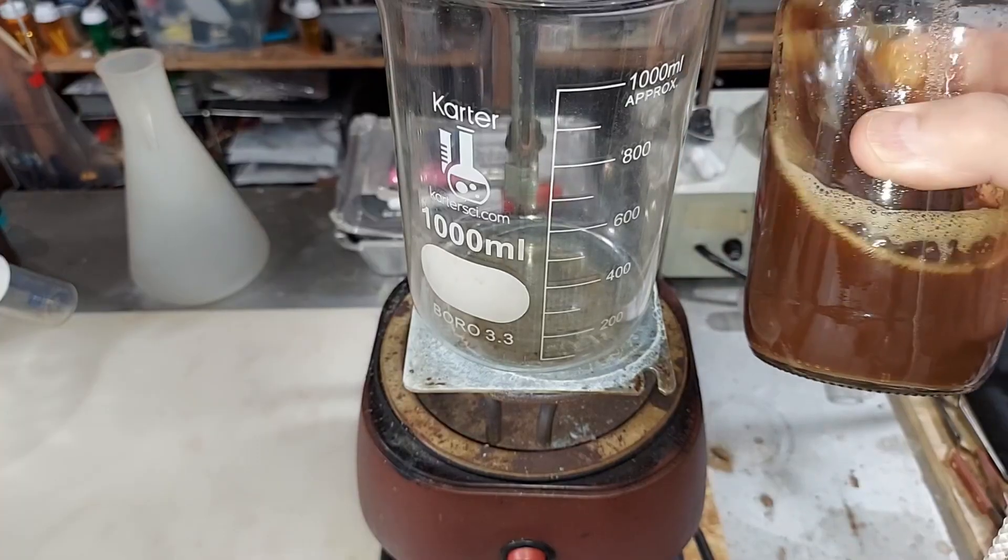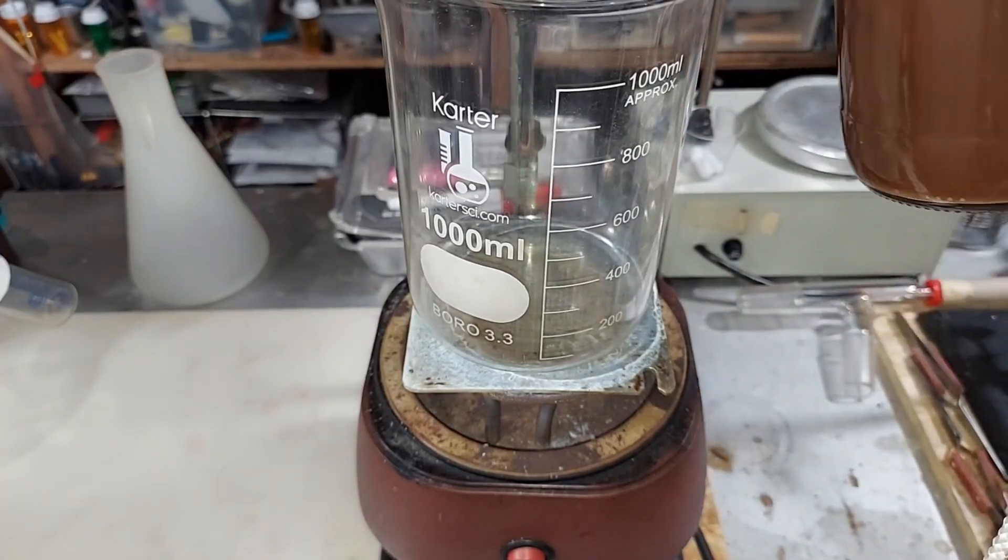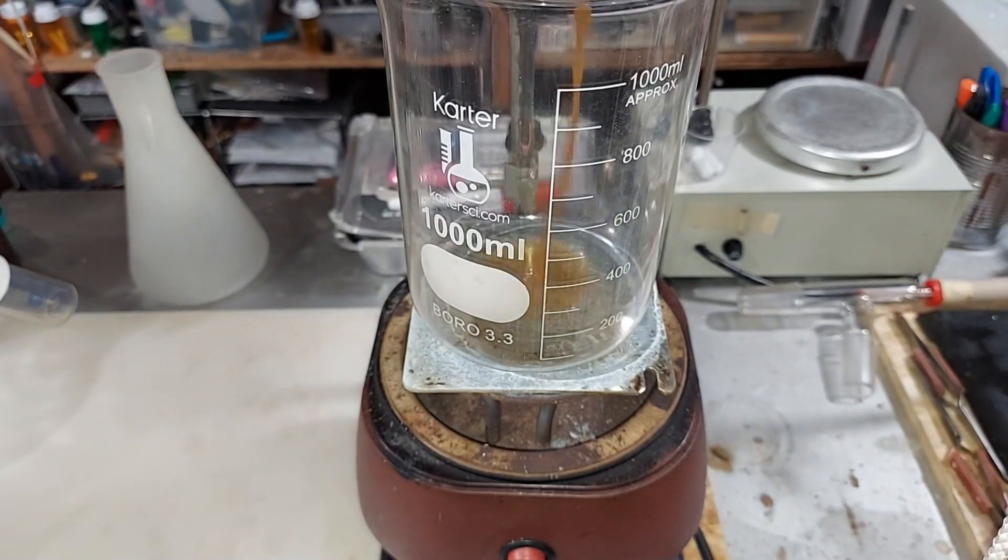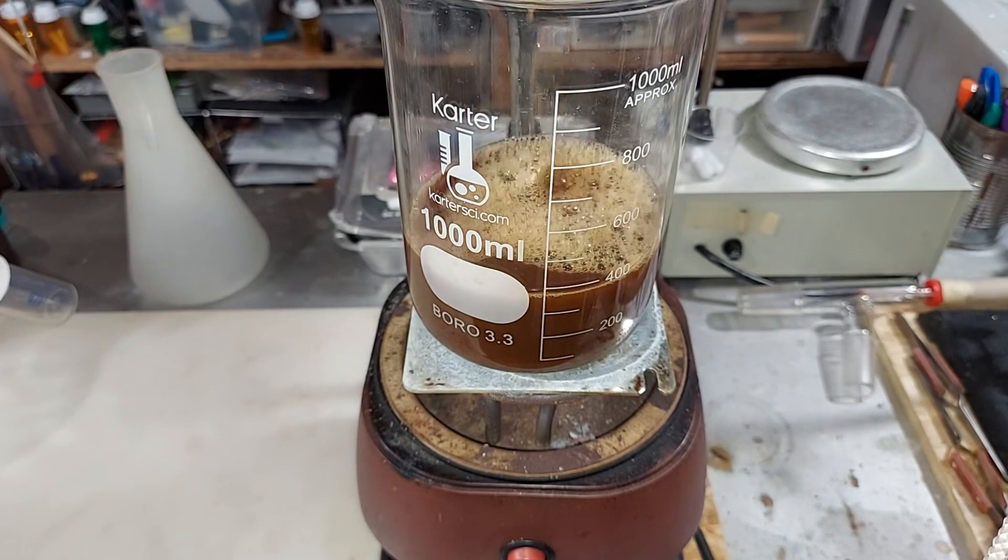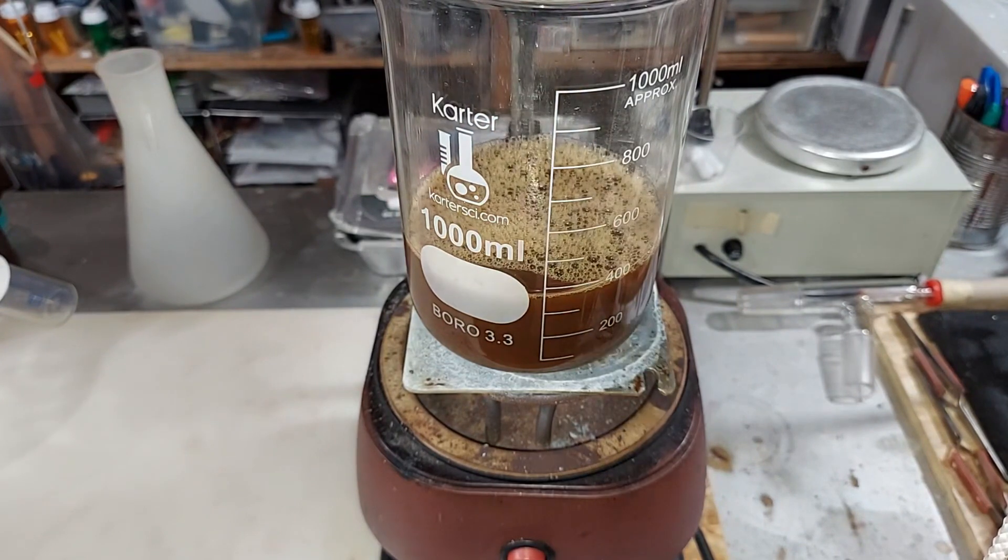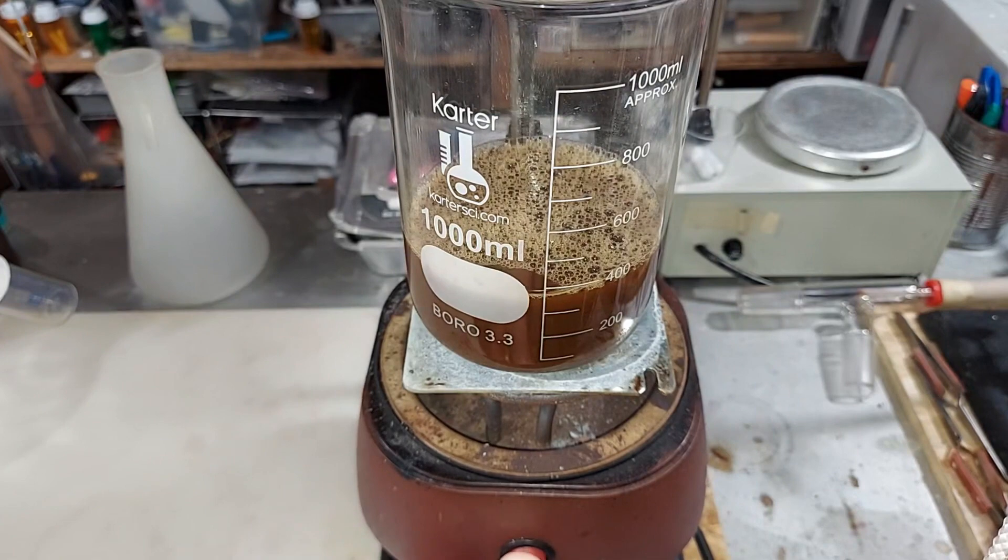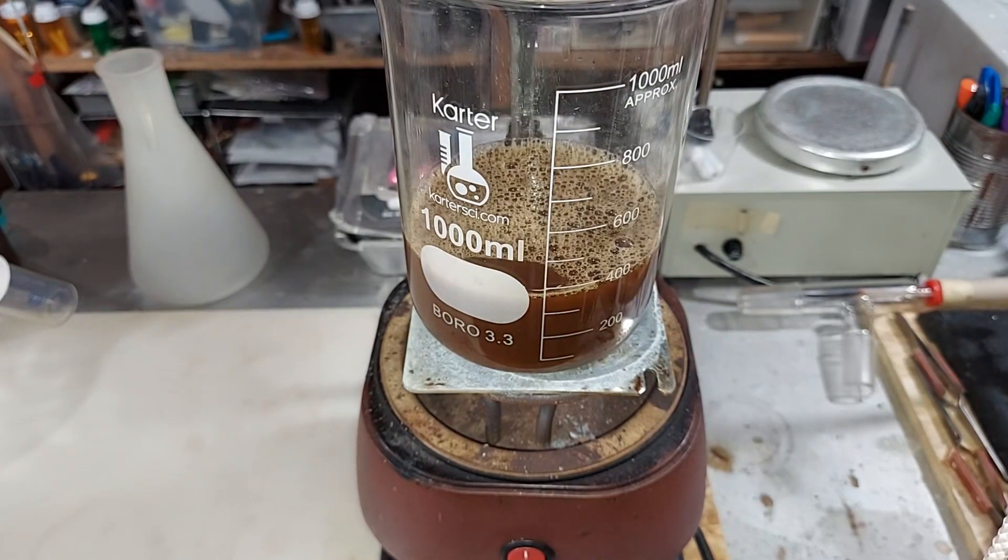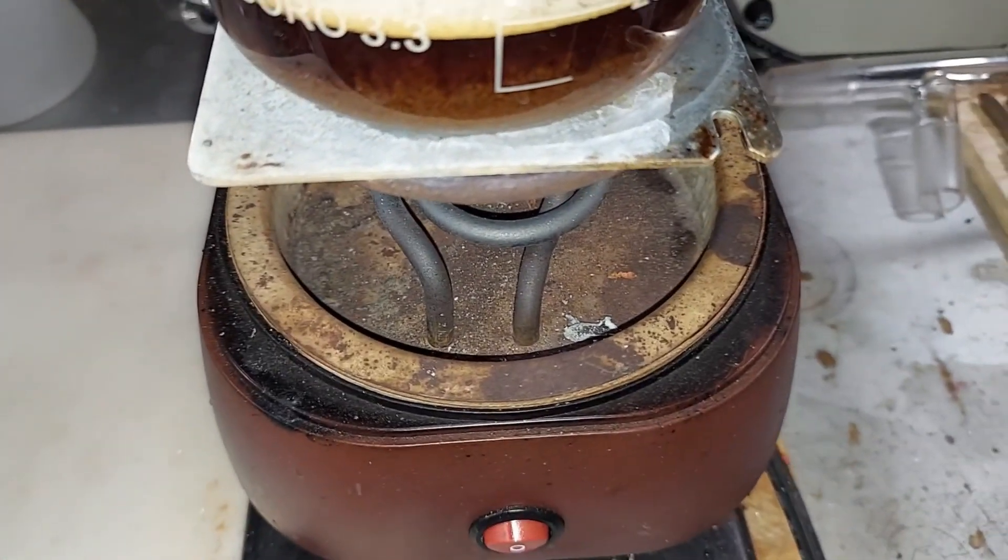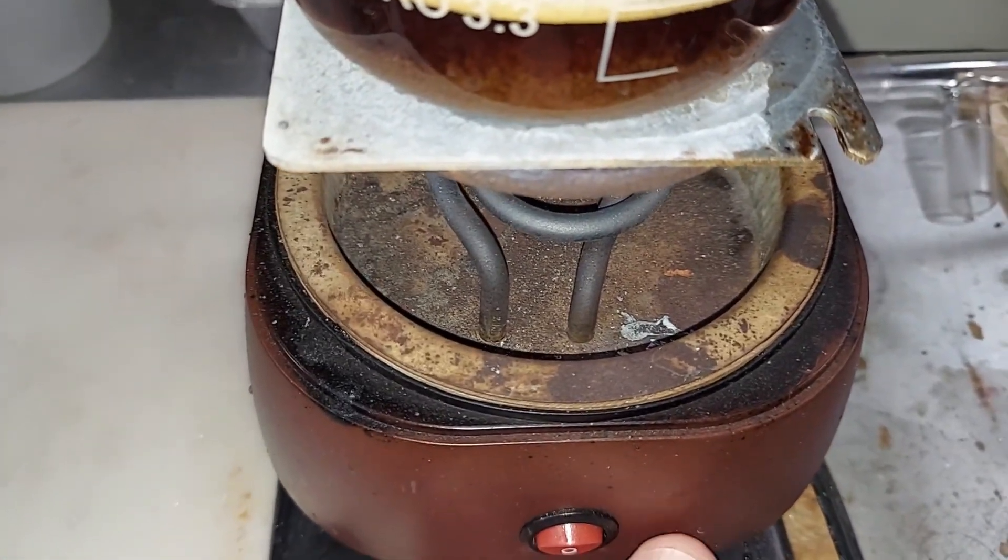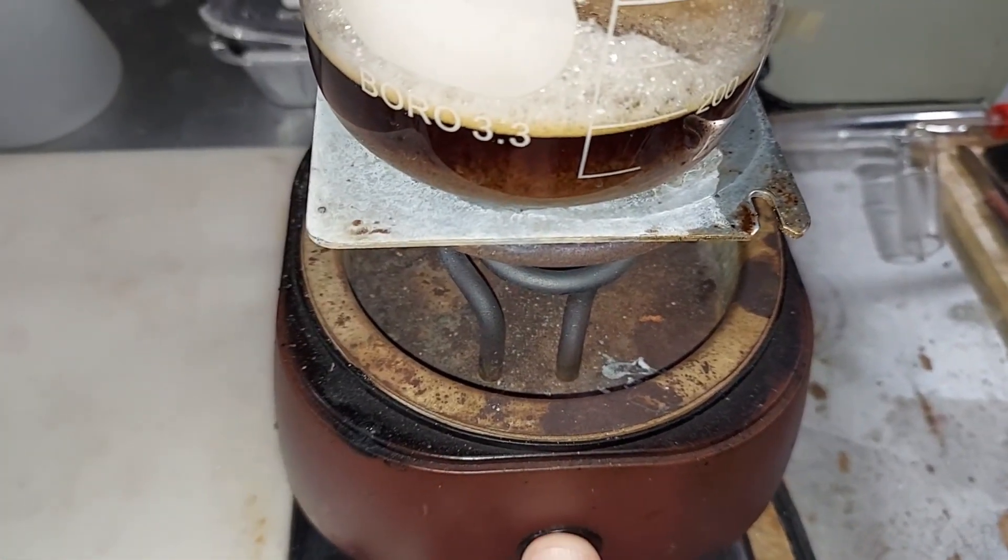This needs to be boiled down even more to about 200 milliliters so I'm gonna go ahead and do that. I'll be transferring the already dehydrated urine into this beaker here to further boil off some water. Turn that on and let it run till it's under 200 milliliters. The urine has boiled down to 200 milliliters almost right on the money, so I'm going to turn this off and we're going to move on to the next part.